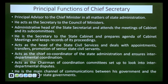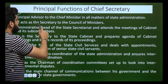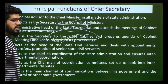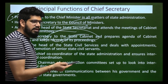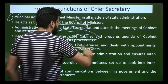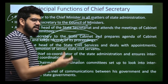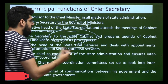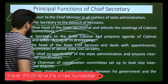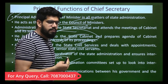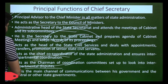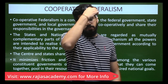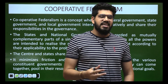The principal functions of the chief secretary are: principal advisor to the chief minister; secretary to the council of ministers; administrative head of the state secretariat; secretary to the state cabinet and preparer of agendas for cabinet meetings — cabinet meetings cannot be held without the chief secretary; head of state civil services with appointments of civil servants done under his concurrence; chief coordination officer between administration and other departments; chairman of the coordination committee for interdepartmental disputes; and main channel of communication between the centre and the state government.